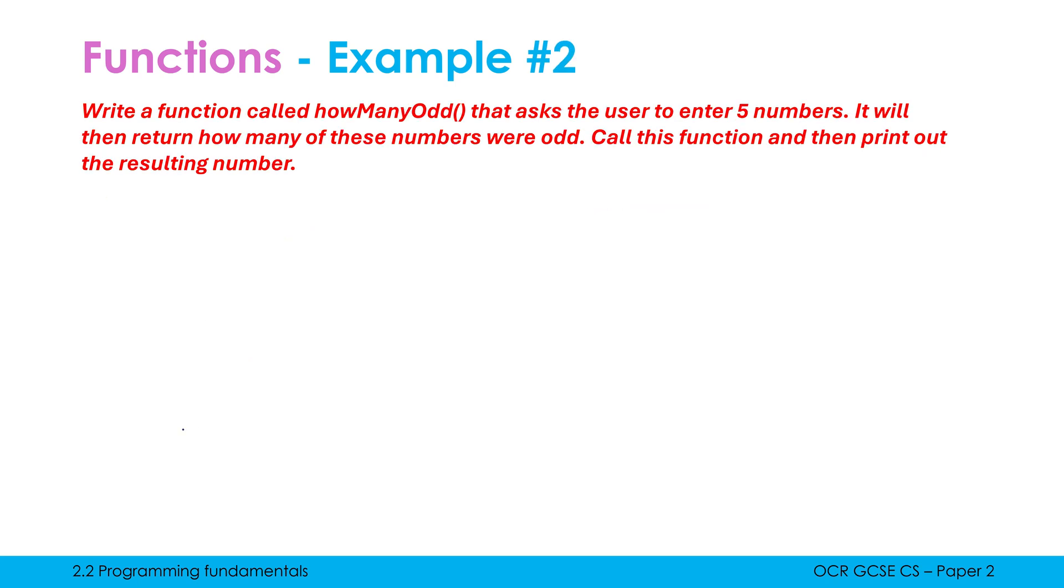A slightly trickier example is this one. We're writing a function called how many odd that asks the user to enter five numbers. It will then return how many of these numbers were odd. Call this function and then print out the resulting number. Before you start, it's worth doing a bit of planning. To get the user to enter five numbers, we should not just be having five input lines - we should be having a for loop here to do this efficiently. Do I need parameters here? Well, it doesn't mention any parameters and we're asking the user for this, so my input is coming from the user and not from parameters. And it's definitely a function - it says function, but also you have the word return.